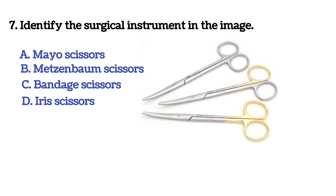Next question: identify the surgical instrument in the image. Option A: Mayo scissors. Option B: Metzenbaum scissors. Option C: bandage scissors. Option D: iris scissors. The answer is B, Metzenbaum scissors.